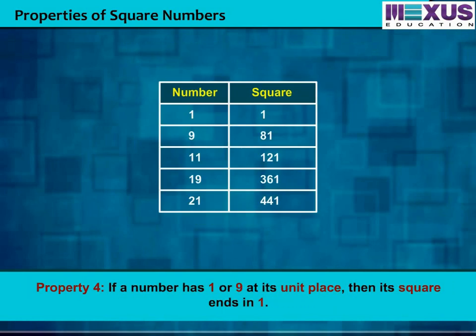If a number has 1 or 9 at its unit place, then its square ends in 1. For example, look at this table. Here we can see that the numbers ending with the digit 1 at its unit place have their square numbers ending in digit 1.